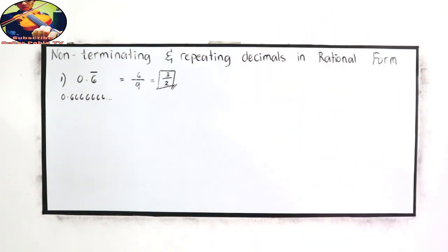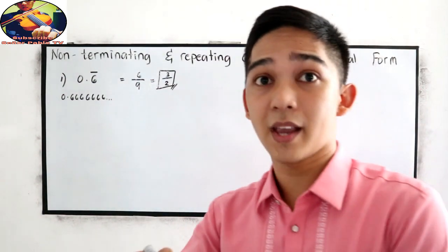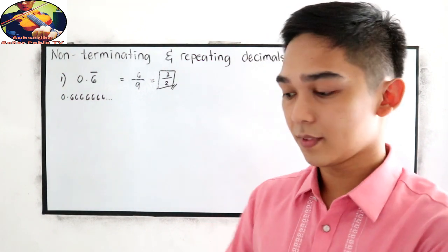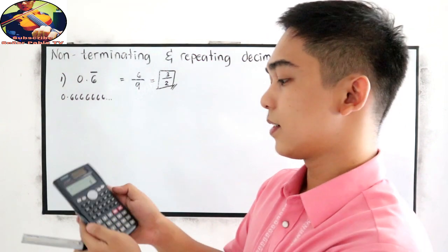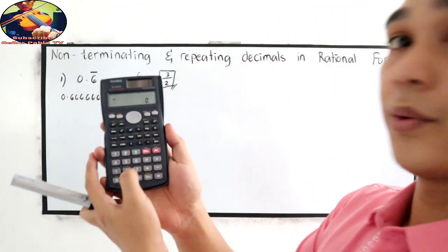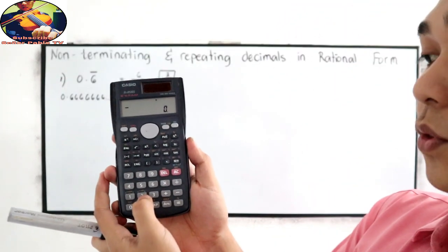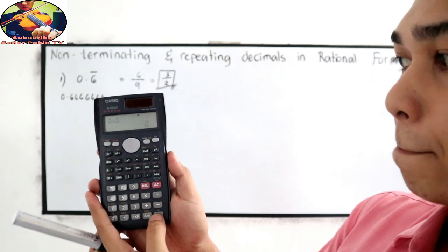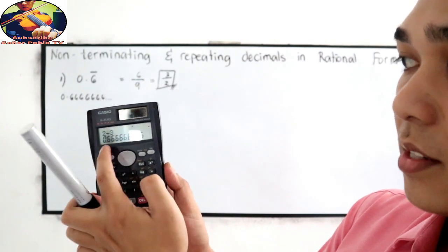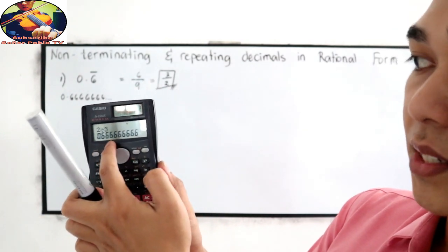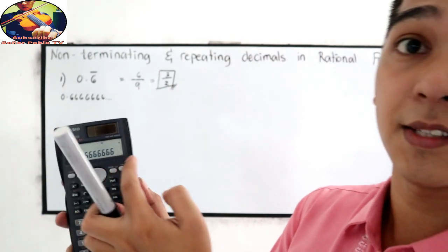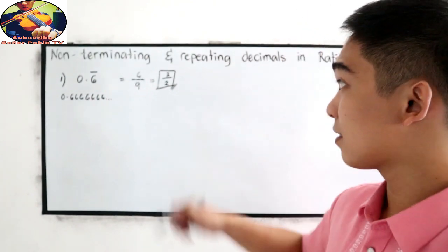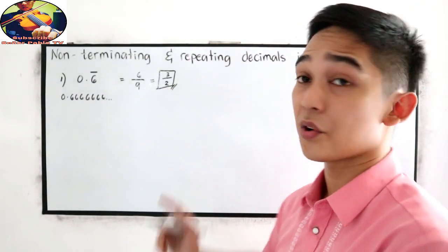Let me show you using my calculator. 2 divided by 3 equals 0.66666666. So that means our answer is correct.